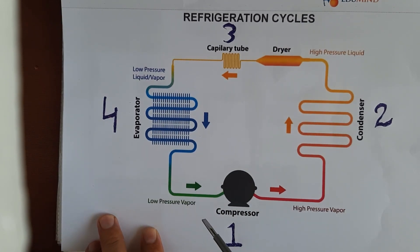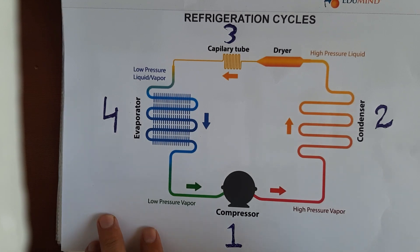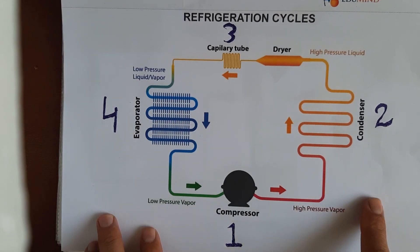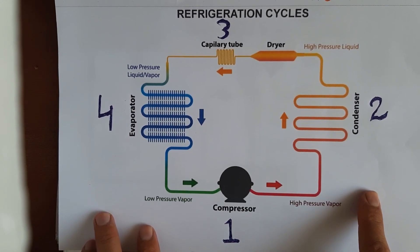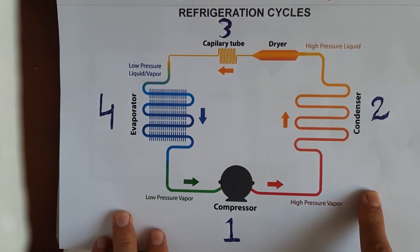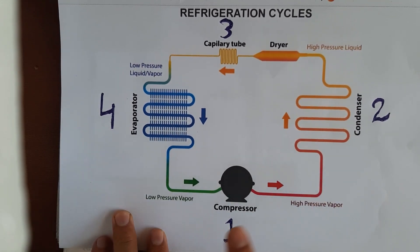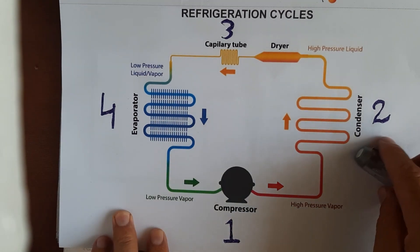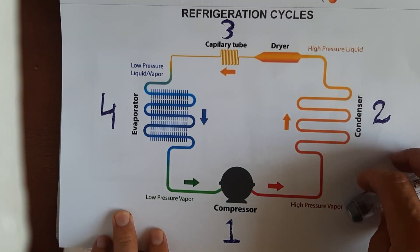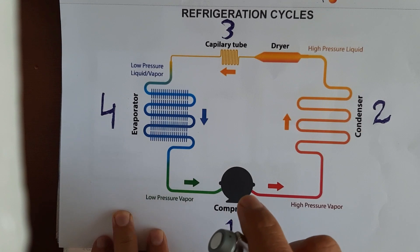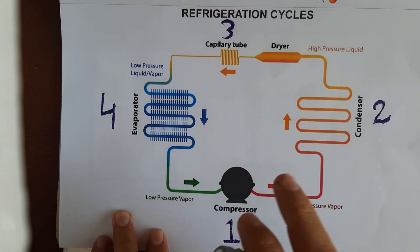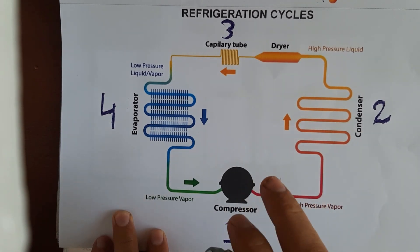The refrigeration system is the same everywhere — for small units and bigger units, the refrigeration cycle will be the same. We will see the compressor, condenser, capillary, and evaporator. In small units you will see a capillary tube, like in a refrigerator, under-counter chiller, or small AC.